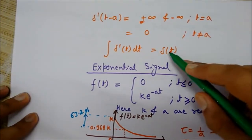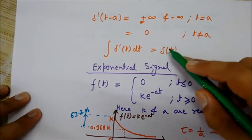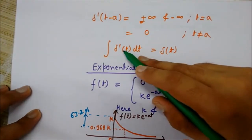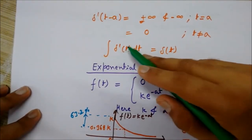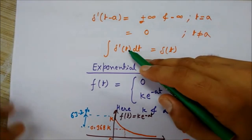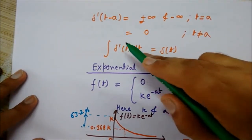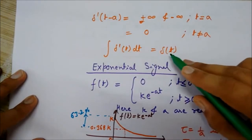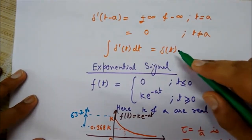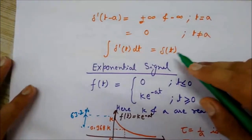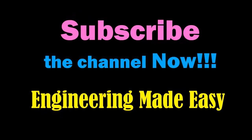Since by differentiation of the impulse signal we get the unit doublet signal, we can say that if we integrate the unit doublet signal, we will get back the impulse signal. This is reversible.